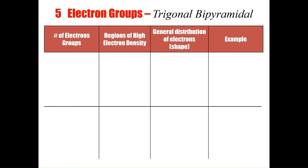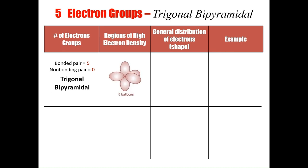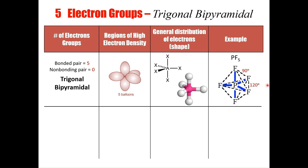The next geometrical arrangement is five electron groups, taking the name trigonal bipyramidal. There are four possible molecular shapes. The first has all five electron groups bonding to atoms — arranged like two triangular pyramids stacked together base to base, hence the name trigonal bipyramidal. An example is phosphorus pentafluoride, PF5, with 90 degree angles between the bonding groups in the x-axis and y-axis, and 120 degree angles between the bonding groups in the x-axis.